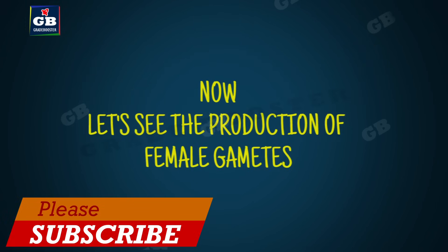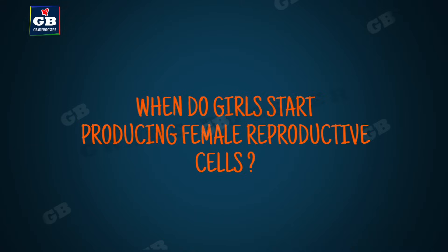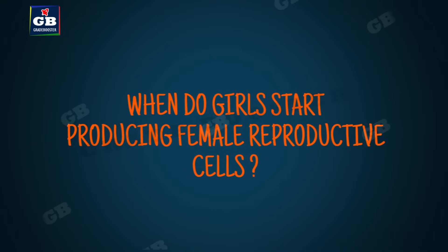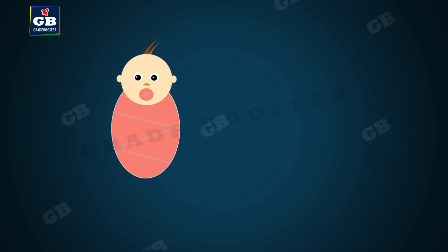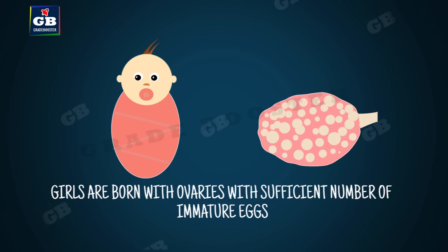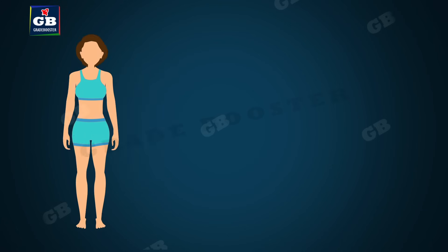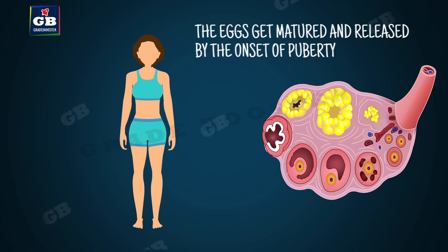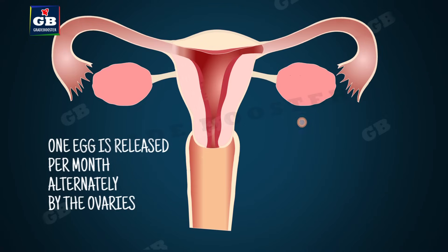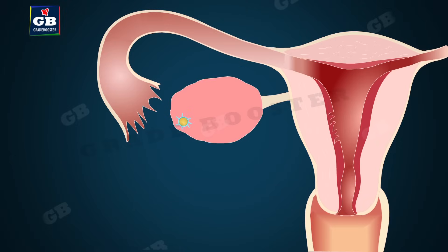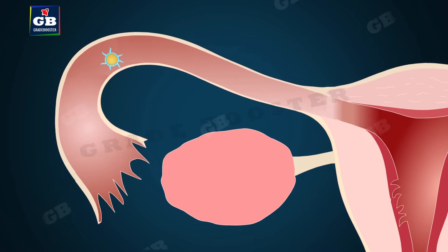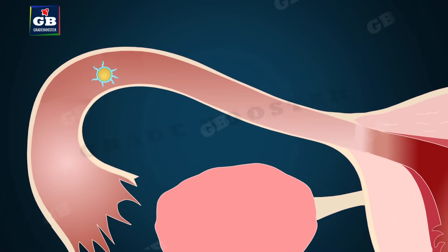When do girls start producing egg cells? When a girl is born, the ovaries already contain thousands of immature eggs. By reaching puberty, the eggs start maturing. One egg is produced every month by one of the ovaries. The egg released by the ovary is collected in the fallopian tube, which is the place where fertilization takes place by the fusion of sperm and egg cells.